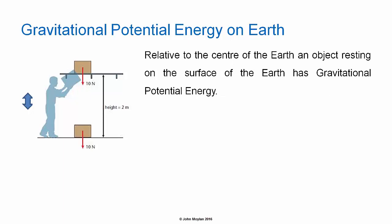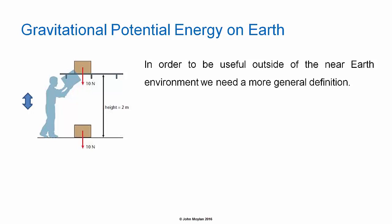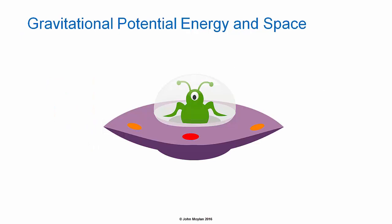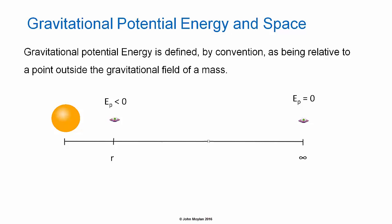Relative to the center of the Earth, an object resting on the surface of the Earth still has Gravitational Potential Energy. In order to be useful outside the near-Earth environment, we need a more general definition of Gravitational Potential Energy than defining it relative to the surface of the Earth. Gravitational Potential Energy in Space. So let's consider Gravitational Potential Energy in more general terms in space. We will take the example of a little spaceship as our test mass. In terms of space, Gravitational Potential Energy is, by convention, defined as being relative to a point outside of the gravitational field of a mass, meaning that Gravitational Potential Energy at an infinite distance from a mass is defined as being zero. In the diagram, the mass relative to which Gravitational Potential Energy is being discussed is represented by an orange circle, which is supposed to show a star.